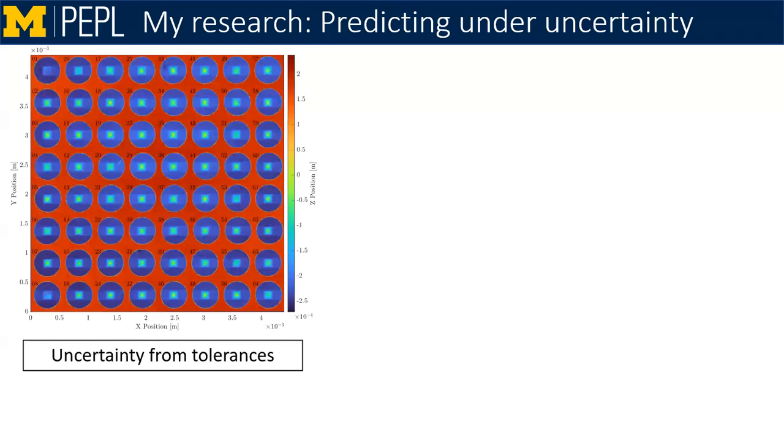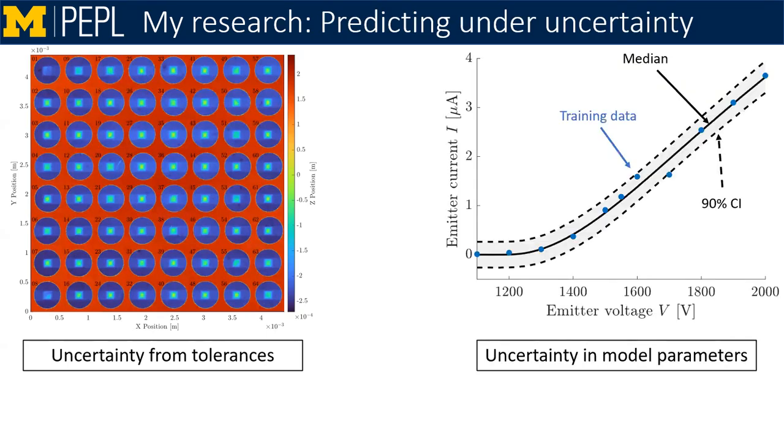With these two pieces of the puzzle in hand, we come to the last thing I want to talk about today. That is, how do we use these techniques to inform our design when we look to build new systems? We have both our uncertainty from manufacturing tolerances and our uncertainty in the physics represented by our model parameters. By combining the two, we can see what implications this has for the behavior of an entire array.